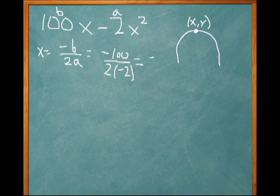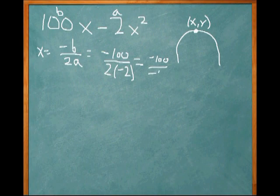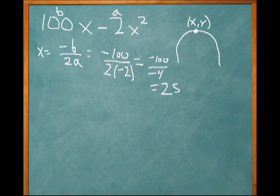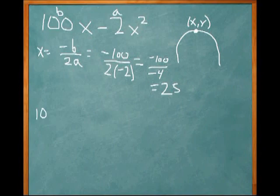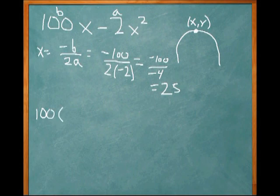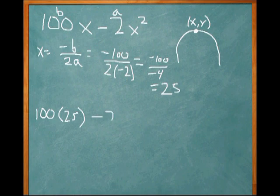So we get negative 100 divided by negative 4, which gives us 25. So that's the X component of our vertex. To find the Y component, we plug in 25 for X into our equation.